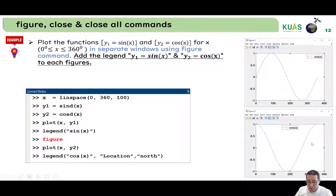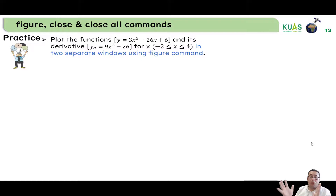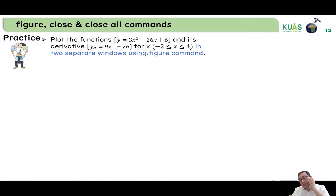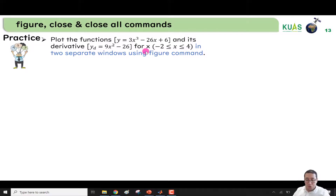Here is the answer shown in the presentation — we wrote what we needed using figure and produced two separate figures. Now here is a practice problem for you: pause the video and try it yourself. We need to plot the function y = 3x³ − 26x + 6 and its derivative yd = 9x² − 26, for x in the range from −2 to 4, in two separate windows using the figure command.